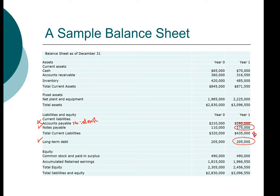We will include notes payable of $175,000 and long-term debt of $205,000. Now these are technically book values, and what we want is market value. For simplicity, we're going to assume that book value is the same as market value — usually that's not the case, so this is a very simplifying assumption. Later on in this class, we're going to look at how to compute the market value of debt.